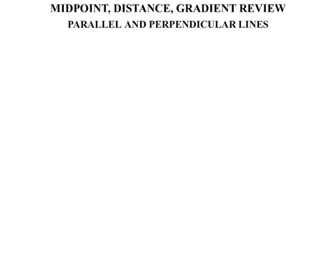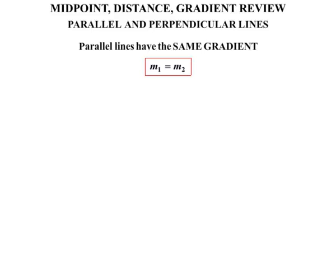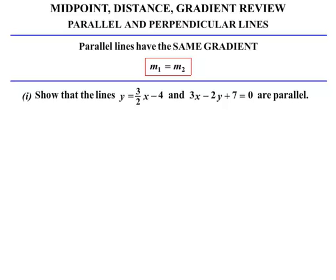Now let's consider parallel and perpendicular lines. Parallel lines have the same gradient — in other words, M1 equals M2; the first gradient equals the second gradient. In part 1, we're asked to show that the lines Y equals (3/2)X minus 4 and 3X minus 2Y plus 7 equals 0 are parallel. For the first equation, the gradient M1 equals 3 over 2 — it's the coefficient of X.